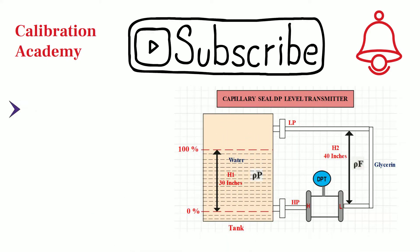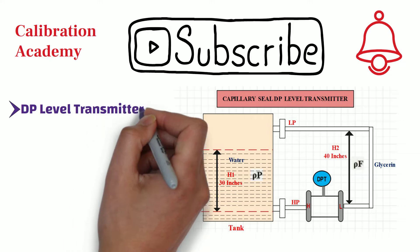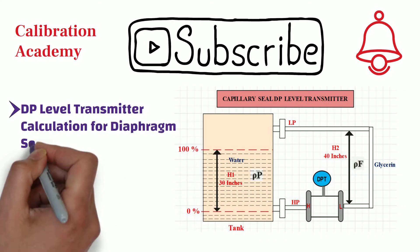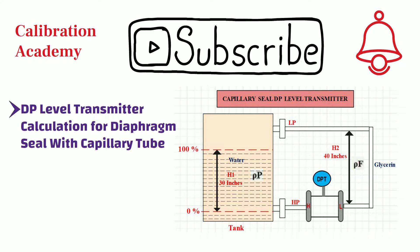This is a short video on differential pressure level transmitter calculation for diaphragm seal type with capillary tube. I will explain the calculation procedure by taking one example.